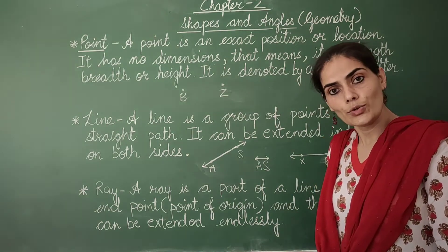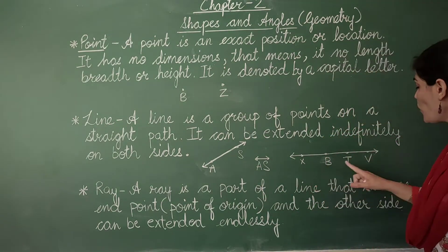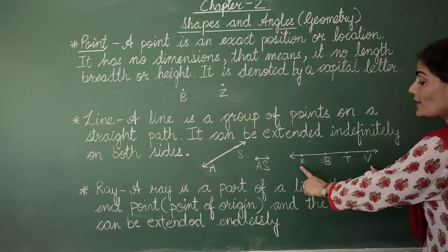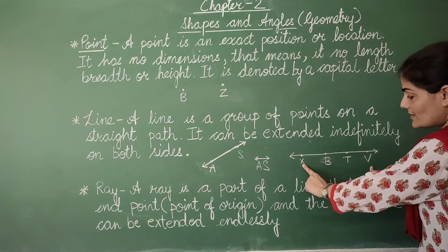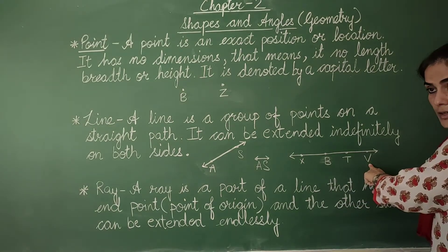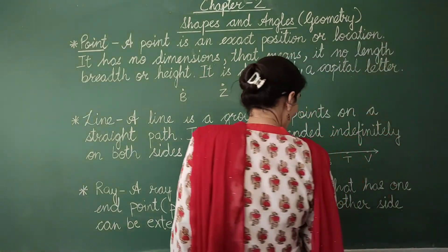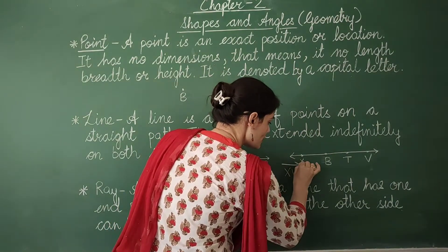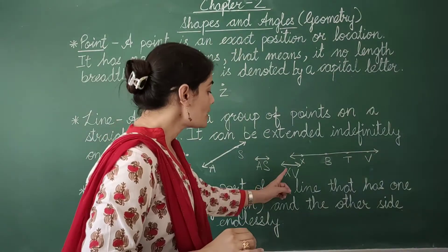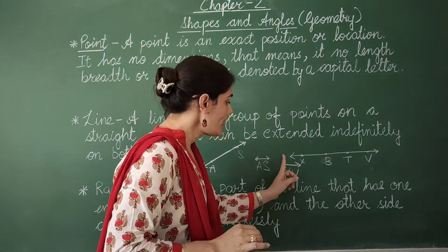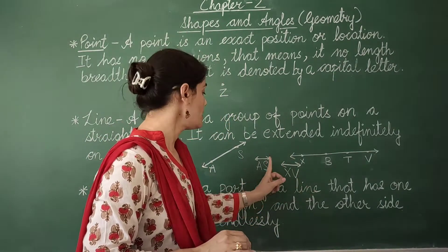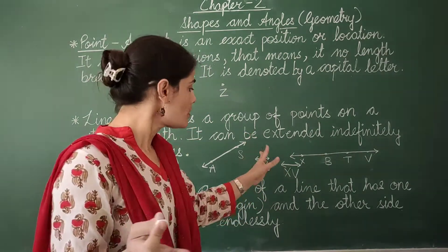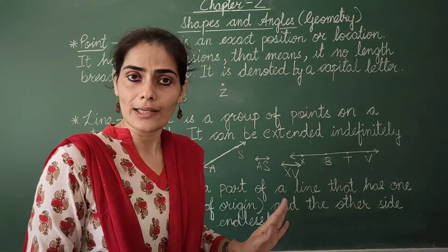Is it clear to everybody? If I want to write the name of this line, I look at the extreme points — X and V. So I write the extreme points together and draw the symbol of a line. You can write V then X, or first S then A. Whichever point you write first, it hardly matters.